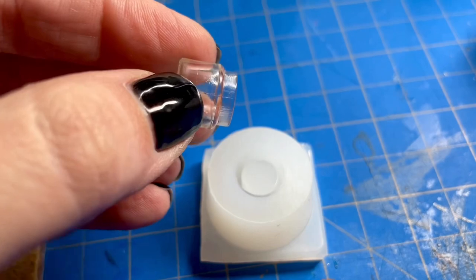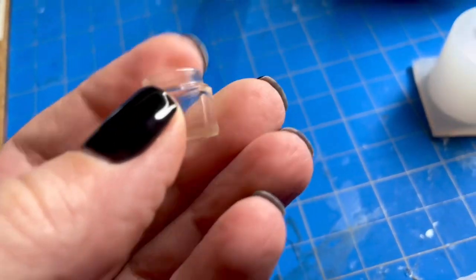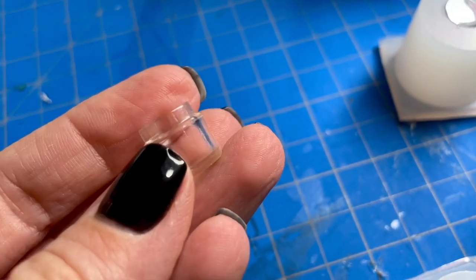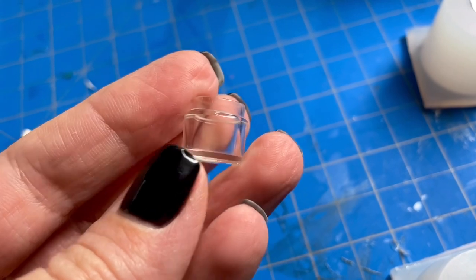And now my jars are ready to take out of the mold. Here's the smallest jar. It is so cute. There's not a single air bubble and I'm really happy with how this turned out.